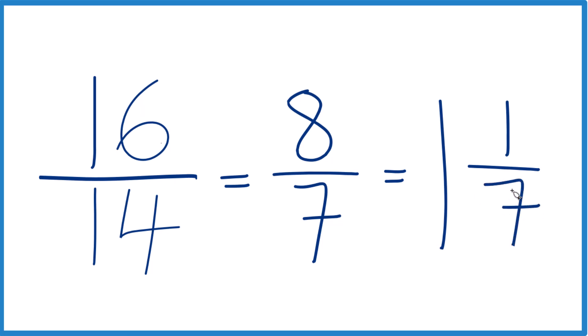Bring the 7 across, and we have 1 and 1 seventh. So 8 sevenths equals 1 and 1 seventh.